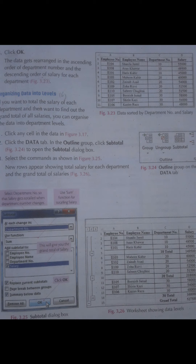Subtotal means کہ Excel sheet کے اوپر جو کام ہے اسے salary کے according arrange کرنا۔ Subtotal command select کرنے کے بعد figure number 3.25 میں ایک dialogue box appear ہوگا، جس میں salary والی command select کر کے OK پر click کریں گے۔ پھر سارا data department wise arrange ہو جائے گا — جیسا کہ figure 3.26 میں دیکھ سکتے ہیں: employee names الگ، department numbers الگ، salary department اور employee wise arrange ہوگی، اور آخر میں grand total میں تمام employees کی overall salary آئے گی۔ اس طرح data کو different levels میں organize کر سکتے ہیں۔